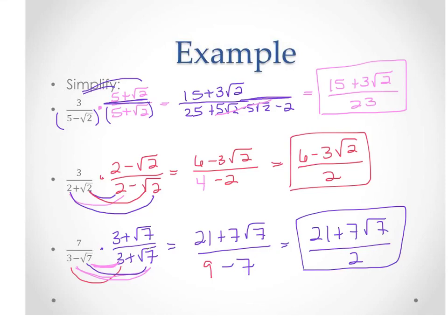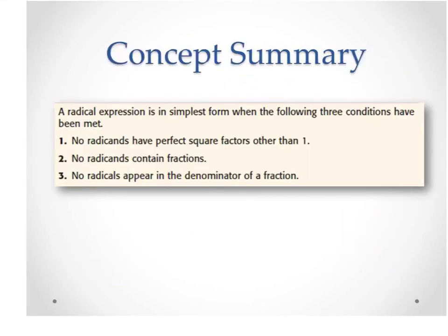Here is a summary of what has to be true for a radical to be simplified: there must be no perfect square factors other than 1 in the radicand, no fractions under the radical — if you have one, use the quotient property to break it apart — and no radicals in the denominator. Once all of those are true, your radical is simplified. Let me know if you have any questions, and we'll see you in class. Have a great day.